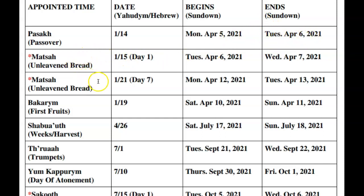Then you have Matzah or Unleavened Bread. It's important to know that Matzah is for seven consecutive days, starting on the evening of April 6th, 2021, going all the way until April 13th, 2021. Then there's also Firstfruits, which will be from evening Saturday April 10th through Sunday April 11th, 2021, from sundown to sundown.